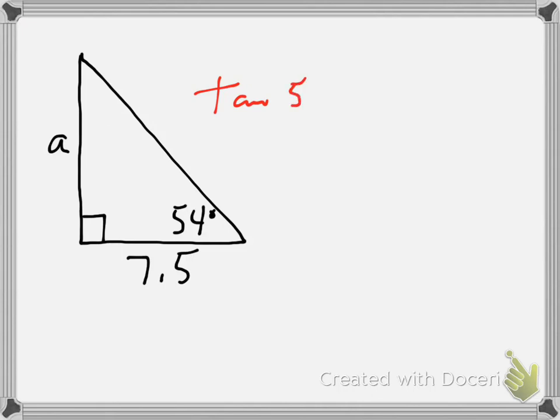Tangent 54 equals opposite is a, adjacent is 7.5. Variables on top again, so 7.5 times tan 54.